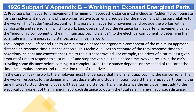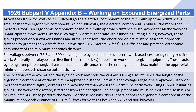At voltages from 751 volts to 72.5 kilovolts, the electrical component of the minimum approach distance is smaller than the ergonomic component. At 72.5 kilovolts, the electrical component is only a little more than 0.3 meters (one foot). An ergonomic component must provide for all of the workers' unanticipated movements. At these voltages, workers generally use rubber-insulating gloves; however, these gloves protect only a worker's hands and arms. Therefore, the energized object must be at a safe approach distance to protect the worker's face. In this case, 0.61 meters (two feet) is a sufficient and practical ergonomic component of the minimum approach distance.